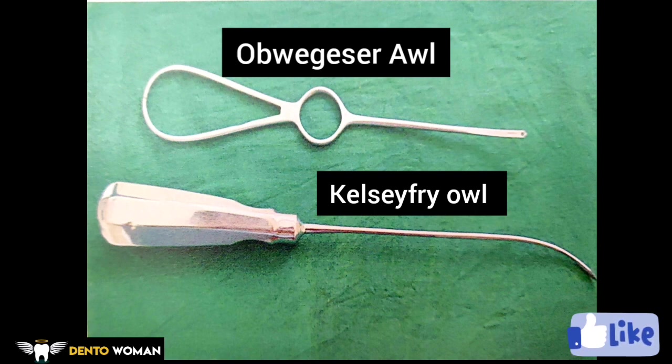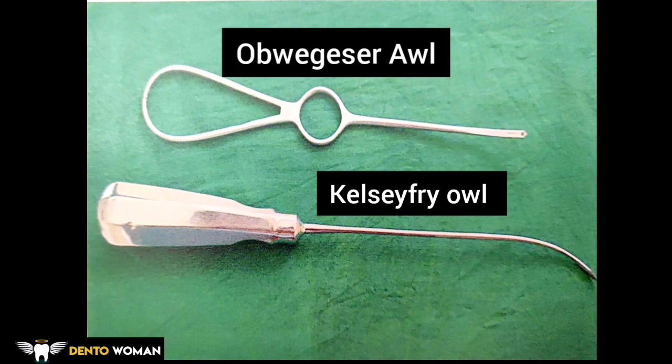Kilner's awl — similar to Obwegeser's awl except the needle is shorter and straight, with an eye at the tip. It also has a fenestrated handle with indentations on the outer surface for grip. It is used for circummandibular wiring of splints to the fractured mandible.